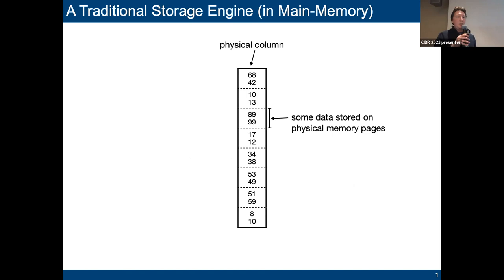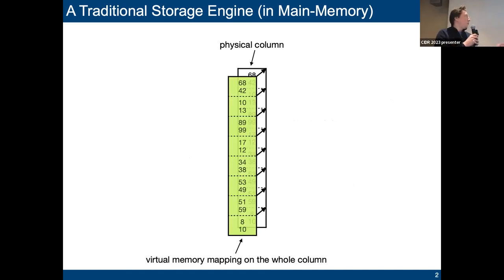Before we can access this column, we first have to map a corresponding virtual memory area onto the physical memory area, as you see here. Then we can actually access it, for instance perform scans, perform filtering, whatever we want to do. This virtual memory mapping that we created here is basically a view on our entire dataset.